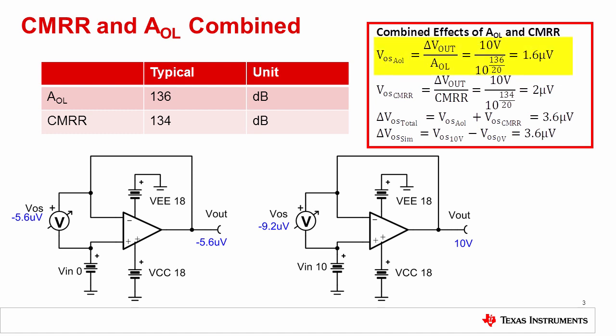For this example, dividing the output voltage change of 10 volts by the open loop gain yields an offset voltage shift of 1.6 microvolts. Performing a similar calculation for CMRR yields 2 microvolts of offset shift. Directly adding the two errors yields 3.6 microvolts of total error. Notice that the simulated and calculated results match well.